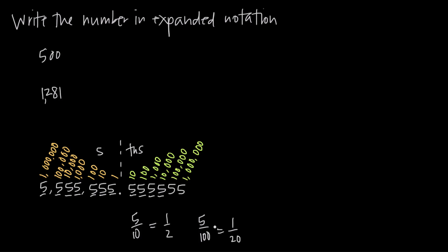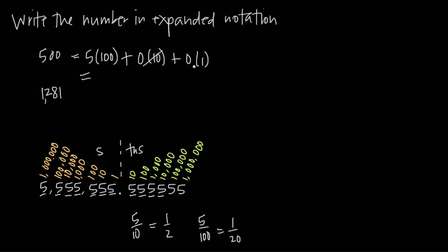If we want to rewrite a whole number in expanded notation, we just take the number in each place and multiply it by its corresponding place value. So in the number 500, we have a five in the hundreds place, so we say five times 100. We have a zero in the tens place, so we add zero times ten, and a zero in the ones place, so we add zero times one. Then we simplify — obviously those two terms are both zero. Five times 100 is 500, but this is expanded notation.